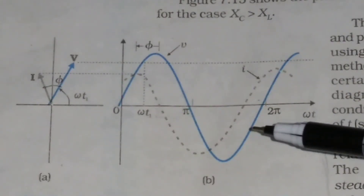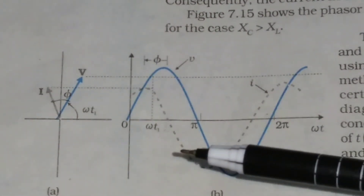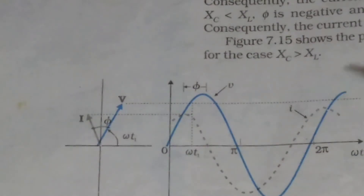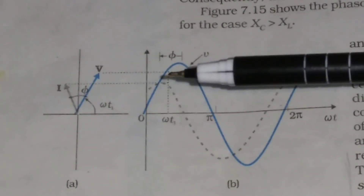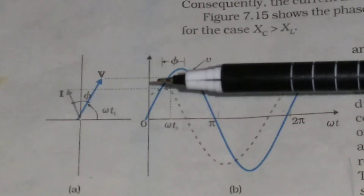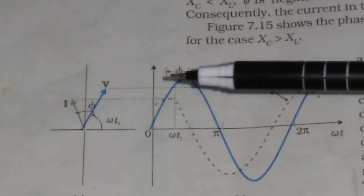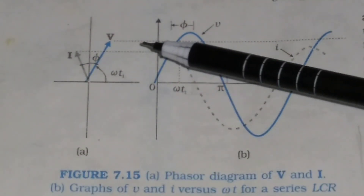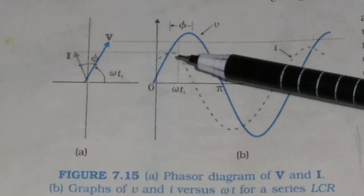If we draw the phasor diagram for the case where Xc > XL in the LCR circuit, the current is leading the voltage by phase angle φ. Here Vm is the maximum value of the voltage and Im is the maximum value of the current. Drawing vertical lines shows the phase difference φ. At any time instant T1, the phasors for V and I are plotted showing the current leading the voltage.